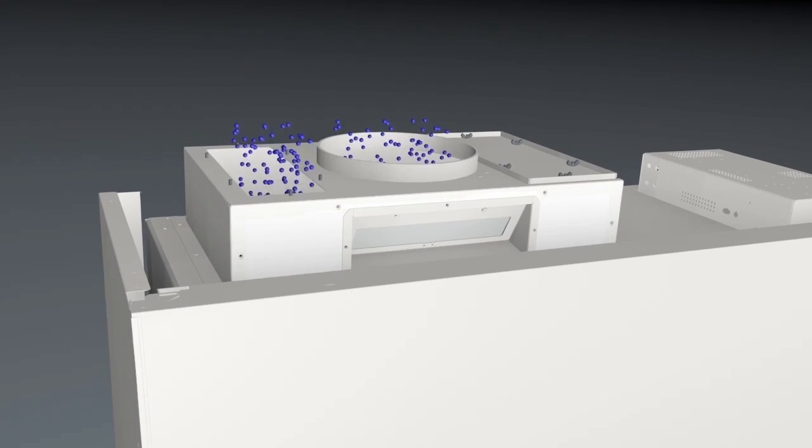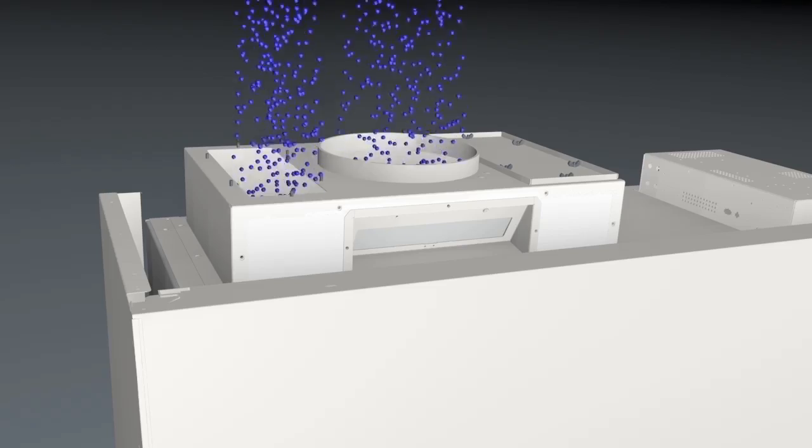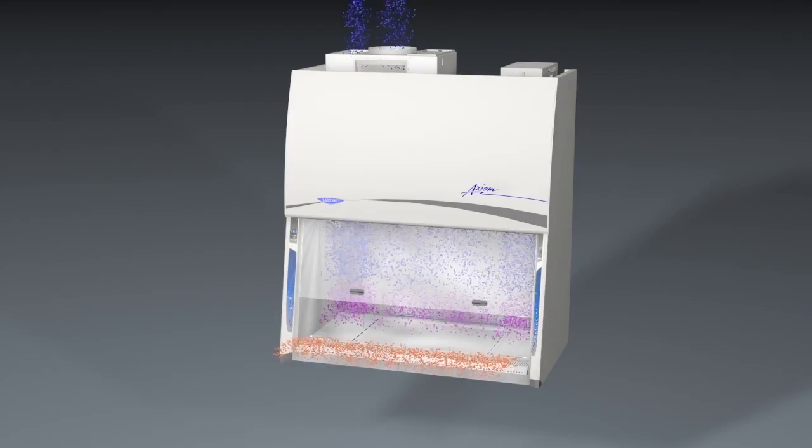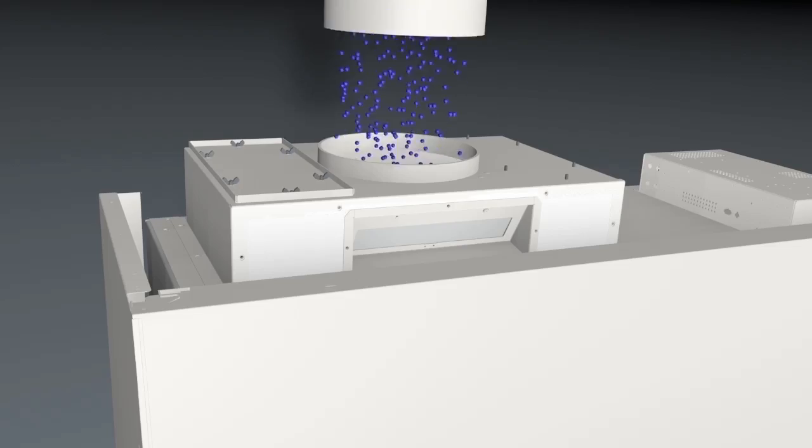The exhaust plenum is designed to alternate pressure based on its installation in either recirculating A mode or exhaust ducted B mode.